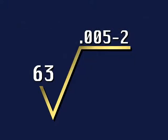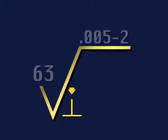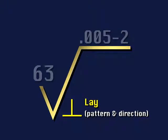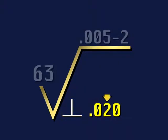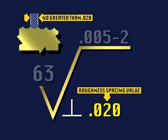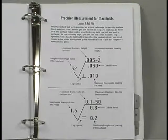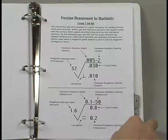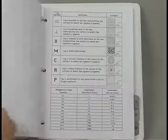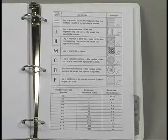The next component is the lay symbol, which indicates the pattern and direction of lay. To the right of the lay symbol, you may find the roughness spacing value — here, the distance from one roughness peak to the next must be no greater than twenty thousandths. You will find a job aid at the end of Lesson 7 in your student guide that will identify the different components that may appear with the surface finish symbol, as well as describe the seven different lay patterns.